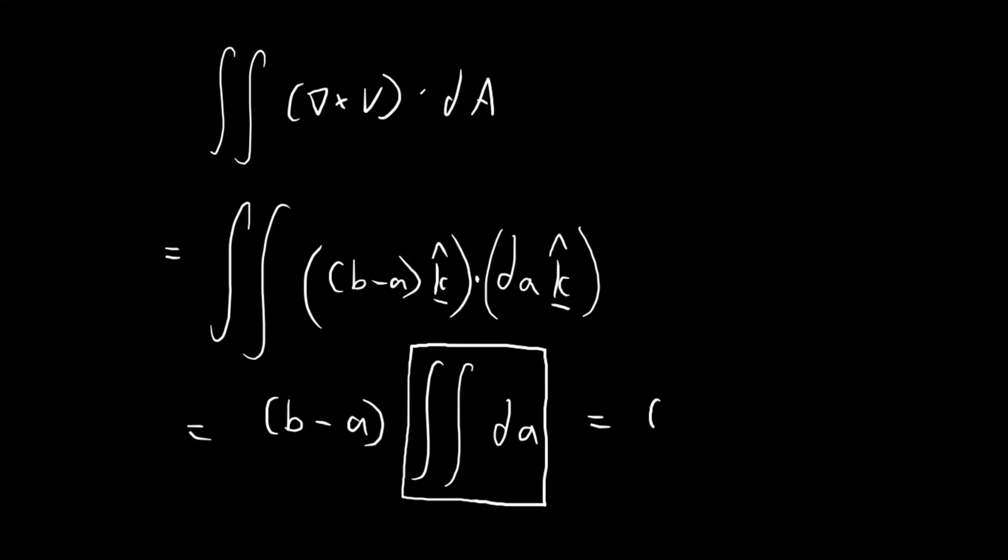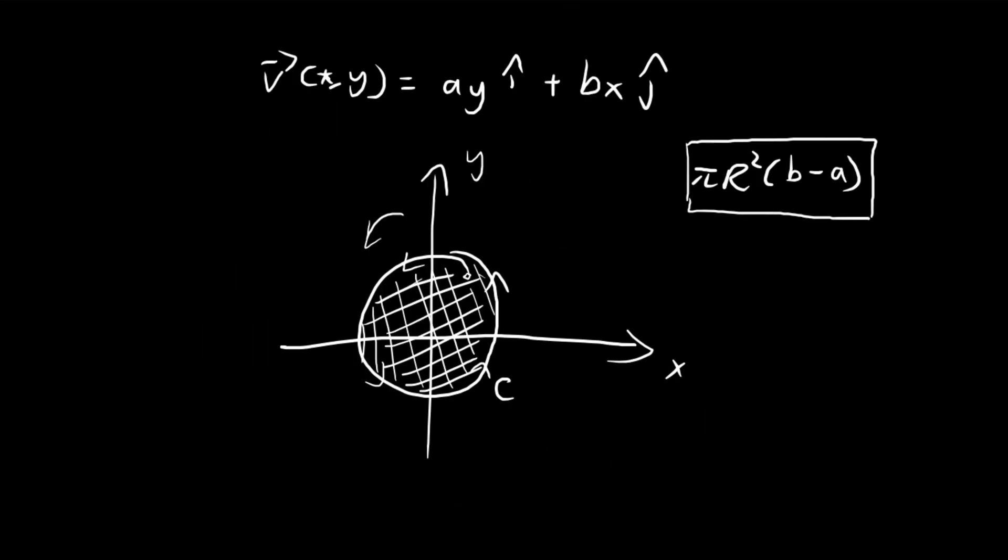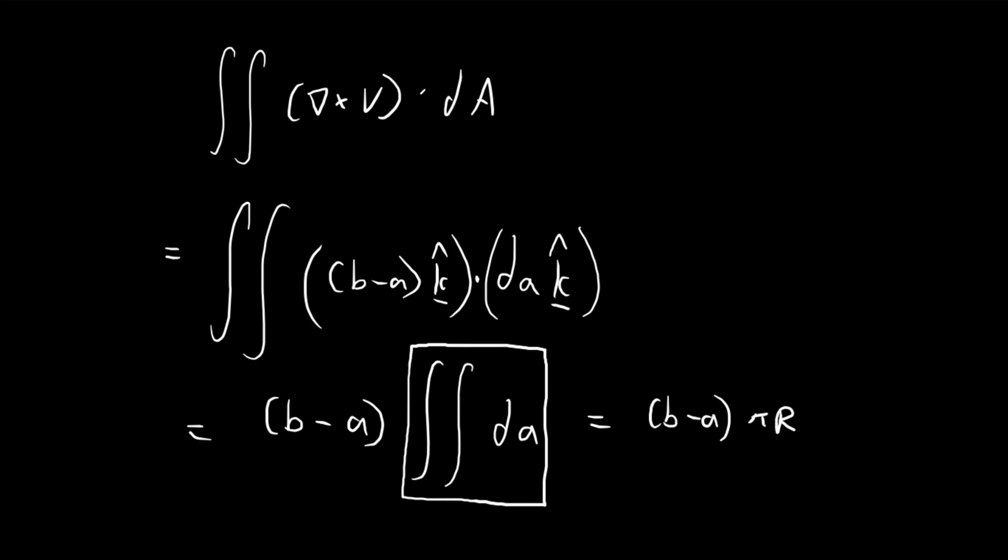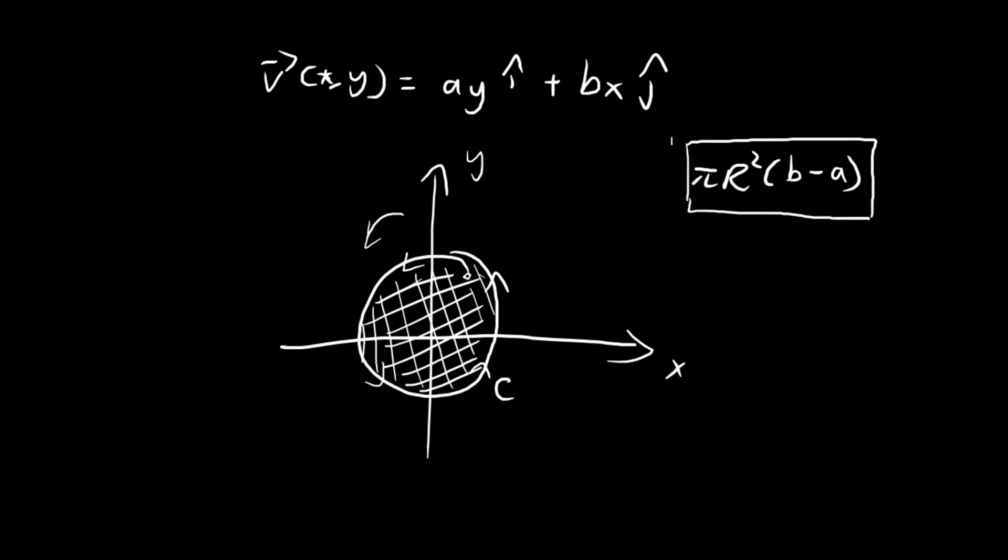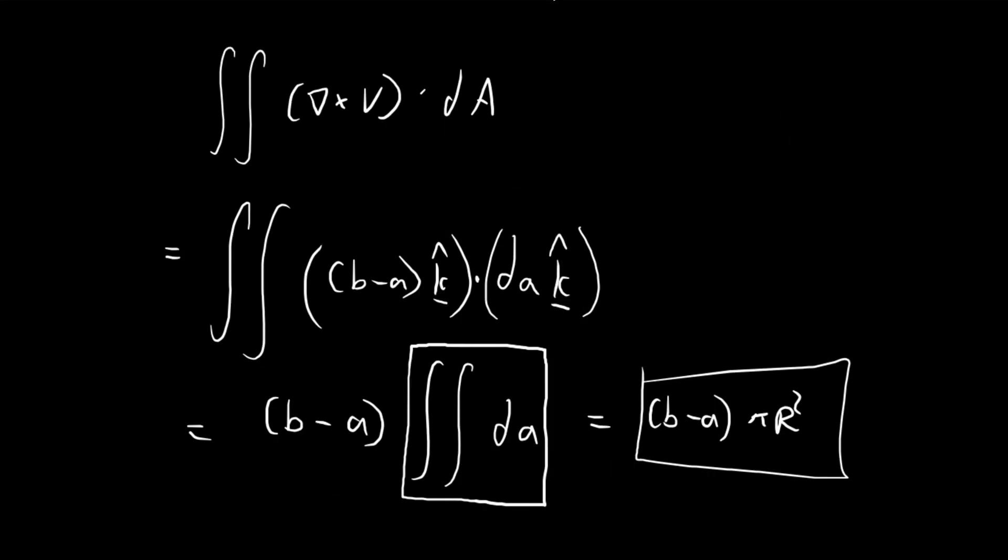So in the end, we have B minus A multiplied by the area of the circle, which is just pi r squared. So you see that we get the exact same answer as we did before. And so this is further verification of the Stokes theorem. So using the line integral, we got this answer. And then using the double integral, we got the exact same answer.